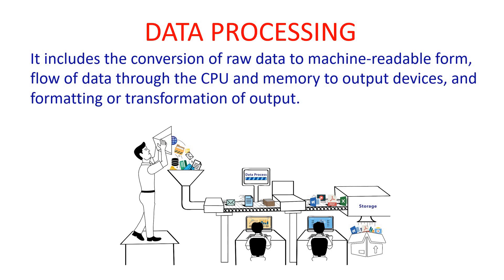What is data processing actually? It is a stage of the AI project cycle in which we are converting raw data into a form that machine learning can use. A machine can understand only the language of 0 and 1, that is binary language. So we convert the data which has been collected and filtered — irrelevant data is removed — and we have only relevant data to be converted to a form the machine can understand. Finally, it takes care of the flow of data from CPU to memory to output devices, and the formatting or transformation of output.